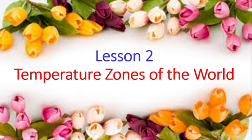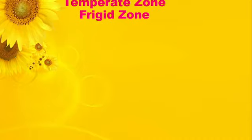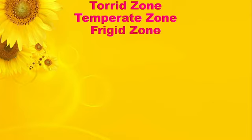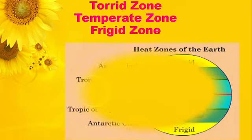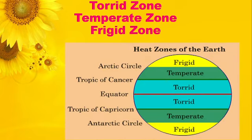In this lesson we are going to study about the three heat zones of the world. The heat zones of the earth are determined by the amount of sunlight they receive. The three heat zones are the Torrid Zone, Temperate Zone, and the Frigid Zone. These zones are found in both the northern and southern hemispheres, distributed as belts running horizontally around the world.